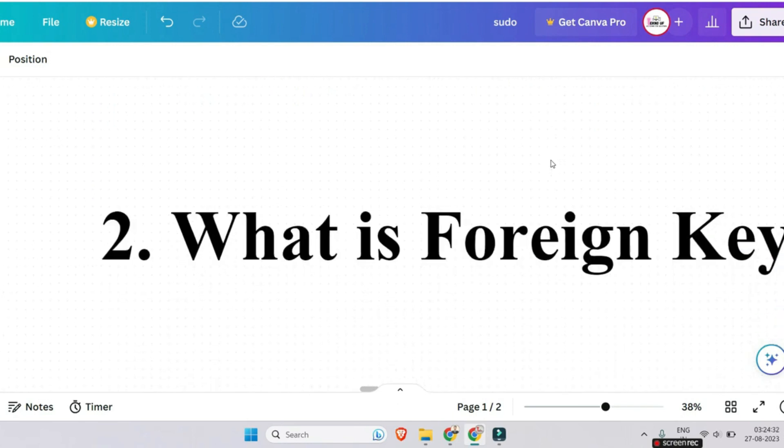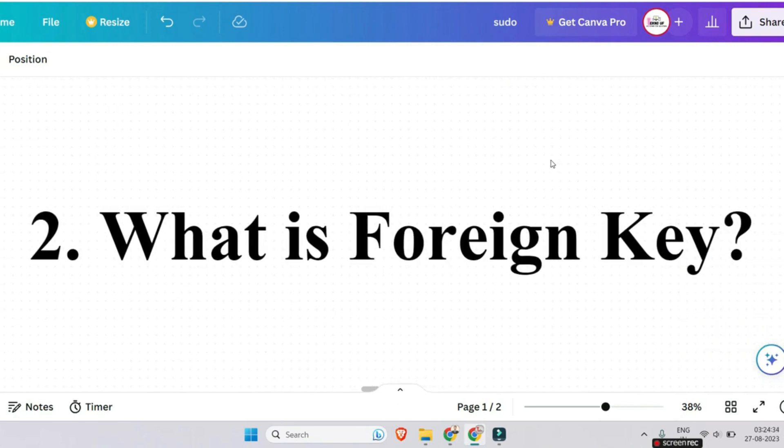The next question is what is the foreign key? This is one of the most asked questions to the non-CS IT students. Please focus on this question. So you can answer this way: a foreign key is a key which links two tables. It is a field or collection of fields in a table that corresponds to the primary key of another table.